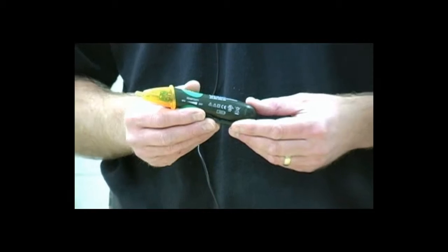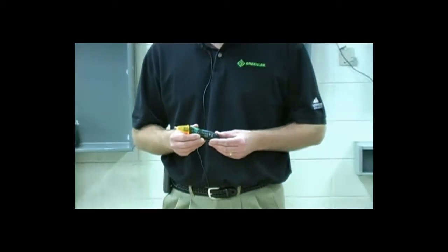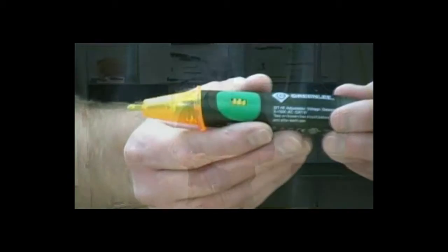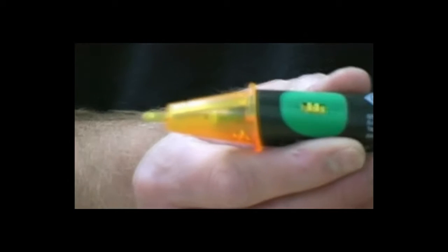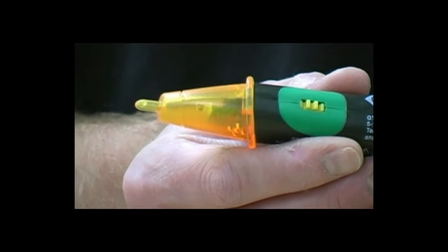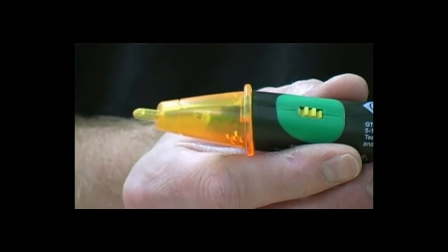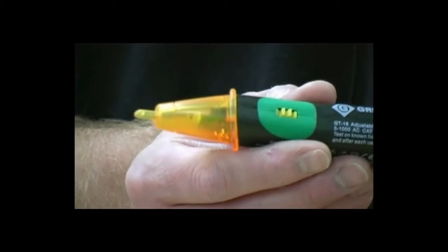The GT16 is a category 4, 1000 volt rated tester with adjustable sensitivity. Its range is from 5 volts all the way up to 1000 volts. It signals the user of the presence of AC voltage through intermittent beeps and flashing LEDs. To turn on the GT16, rotate the thumb wheel toward the tip. Verify the LED is blinking about every 2 seconds or so. This is a self battery check feature.